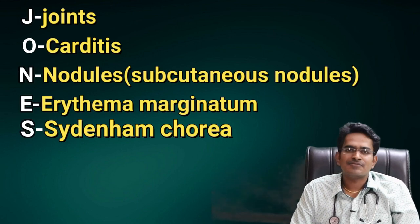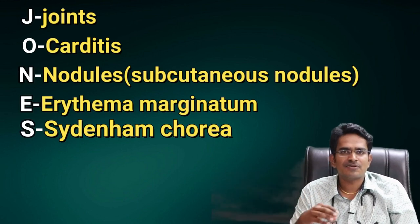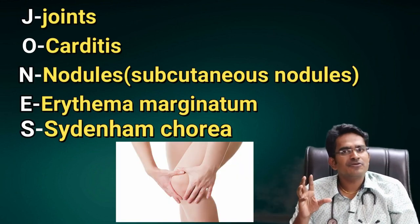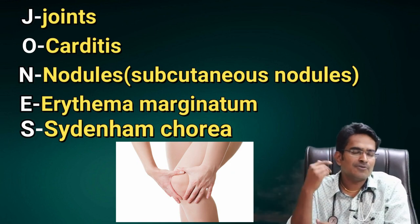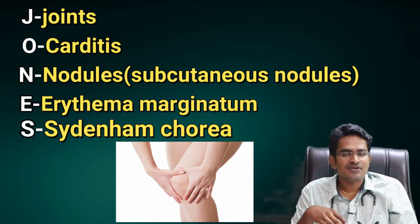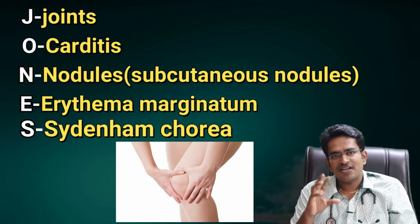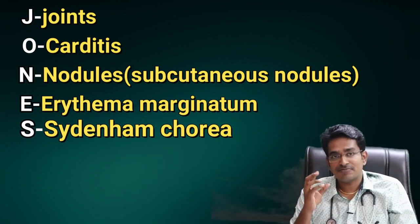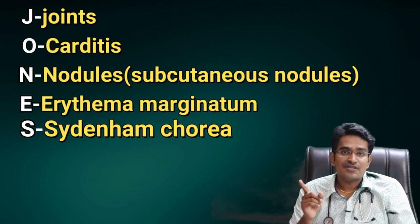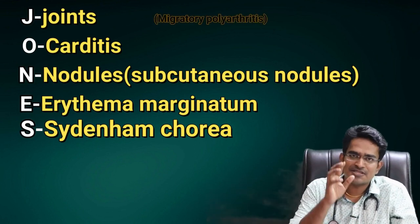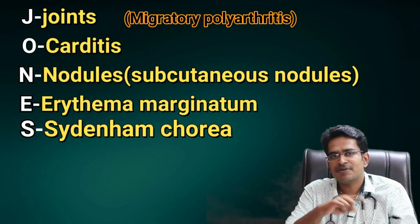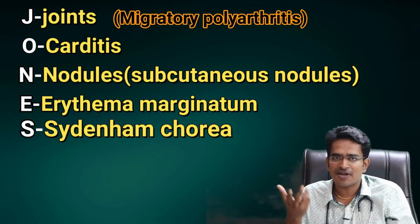Let's talk about the changes caused by this cross-reaction. The joints are affected — specifically the large joints such as the ankle, knee, elbow, and wrist. This joint involvement is called migratory polyarthritis, meaning it moves from joint to joint.